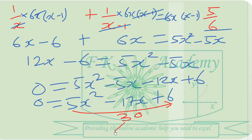Two factors of 30 that will add up to negative 17x will be negative 15 minus 2. So we split the middle term. We get 5x squared minus 15x minus 2x plus 6.